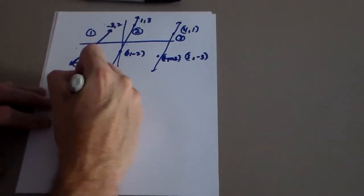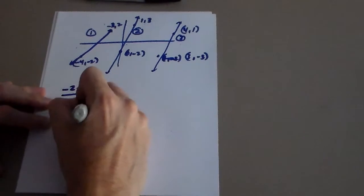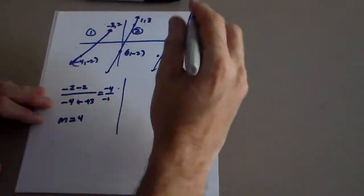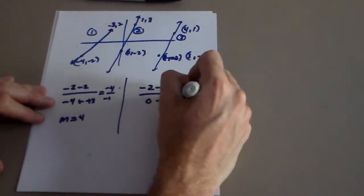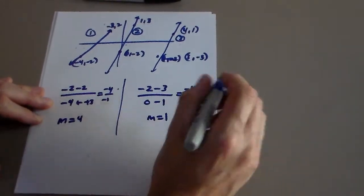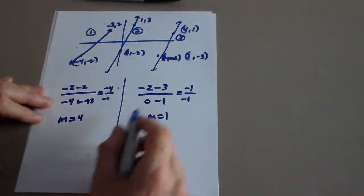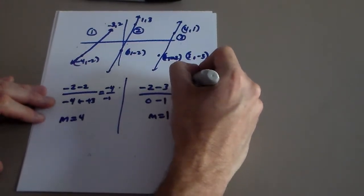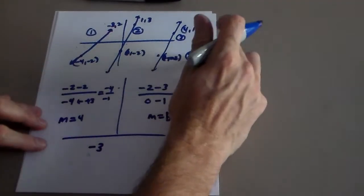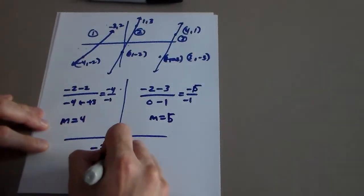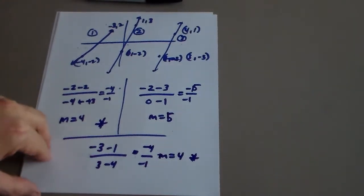For line 1: negative 2 minus 2 over negative 4 minus negative 3 gives negative 4 over negative 1, so slope is 4. For line 2: negative 2 minus 3 over 0 minus 1 — wait, negative 2 minus 3 is actually negative 5, my mistake — so slope is 5. For line 3: negative 3 minus 1 over 3 minus 4 is negative 4 over negative 1, so slope is 4. Lines 1 and 3 are parallel.